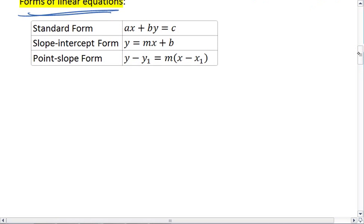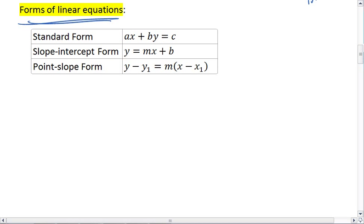The first is standard form, in which case our equations are written as ax plus by equals c. For example, we could have 5x plus 2y equals 10.